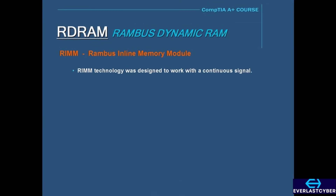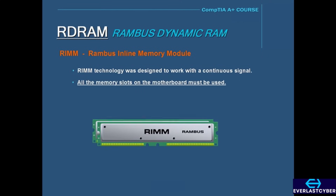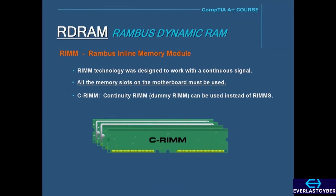RIMM technology was designed to work with a continuous signal, which means that all the other memory slots on the motherboard must be used for RIMMs to work properly. And if other RIMMs are not available, then a user can install a C-RIMM, or continuity RIMM, which is basically a dummy RIMM, to ensure continuity in all the memory slots.